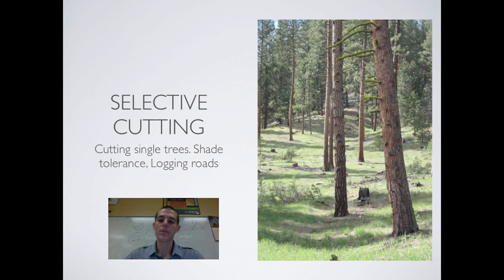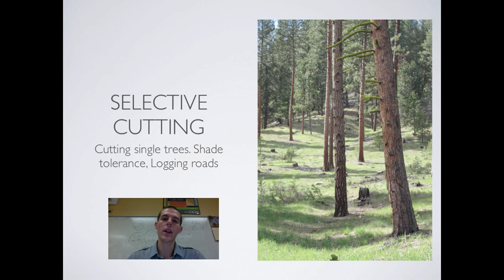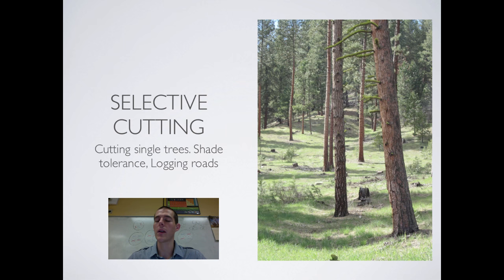A slightly better option is selective cutting — removing only the trees that are commercially valuable, cutting small patches or single trees. This helps preserve the forest, though it still decreases biodiversity. Trees replanted in a selectively cut forest need to be shade tolerant since surrounding trees still provide shade. The biggest environmental damage from selective cutting comes from logging roads and camps, which fragment habitats, compact soil, and cause erosion.